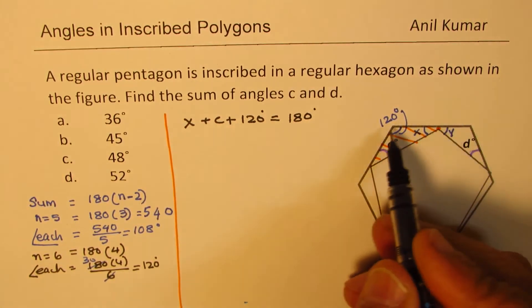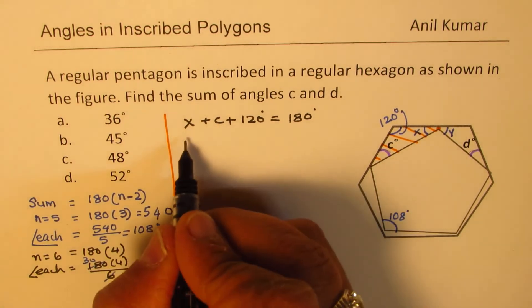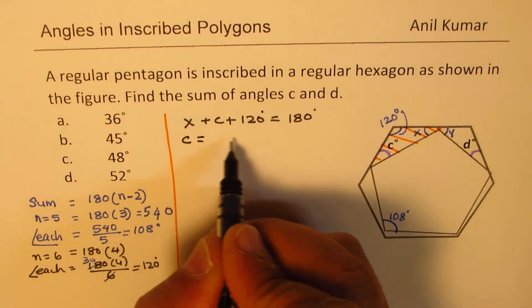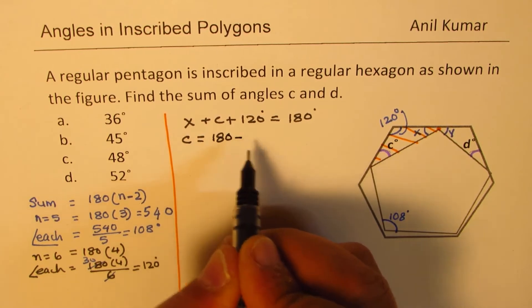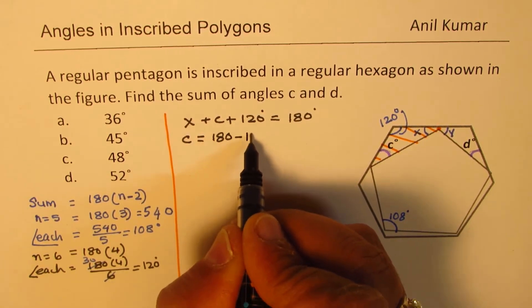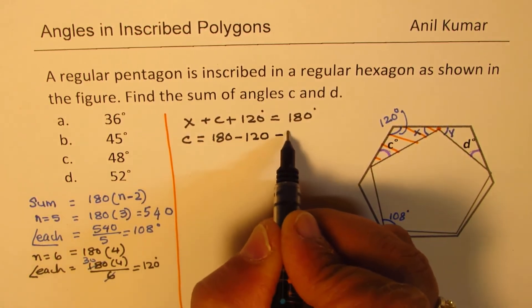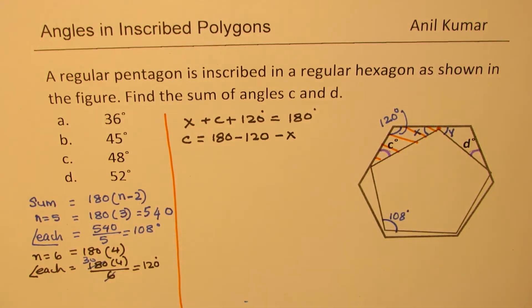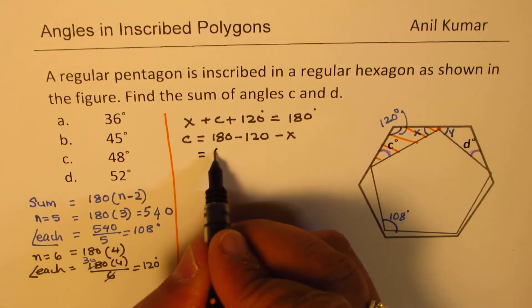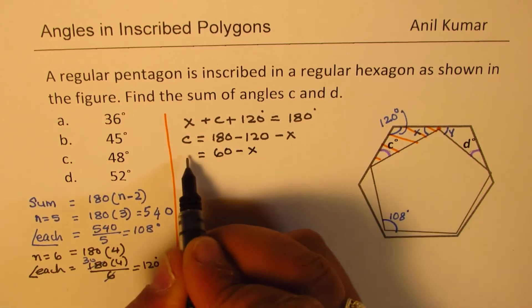So if you consider this shaded triangle, in that case, sum of angle X plus C plus 120 degrees is equal to 180. That is the sum of angles in a triangle. So we can say that C is basically equal to 180 minus 120 minus X, which is equal to 60 minus X. That is C.